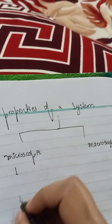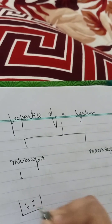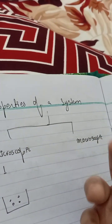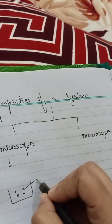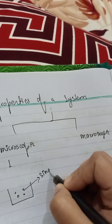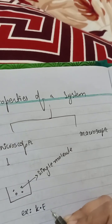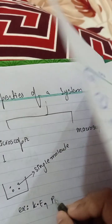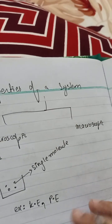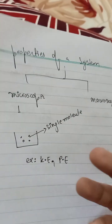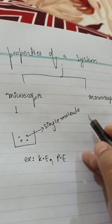Microscopic property — for example, I am having a beaker and here I am having some molecules. So that property which cannot be measured, like you can take the example of a single molecule. Can a single molecule be measured? Obviously not. You can take the example of a molecule having kinetic energy — can you measure it directly? Obviously not. Can you measure the potential energy? Obviously not. Can you measure the translational energy? Obviously not. So that property which cannot be measured is called the microscopic property.